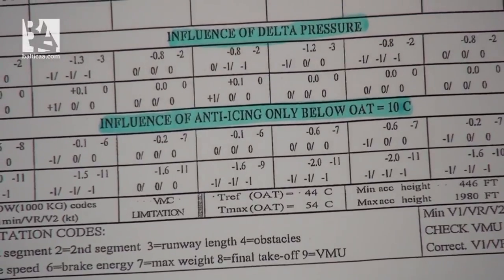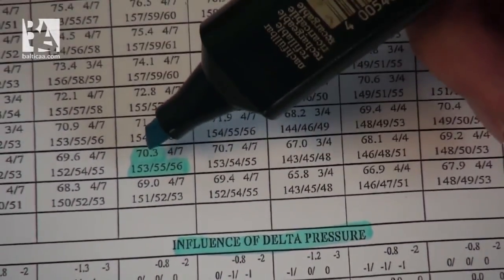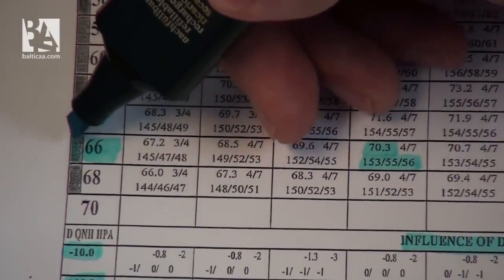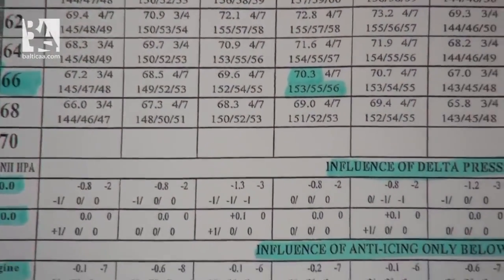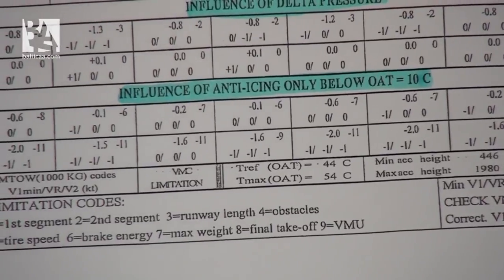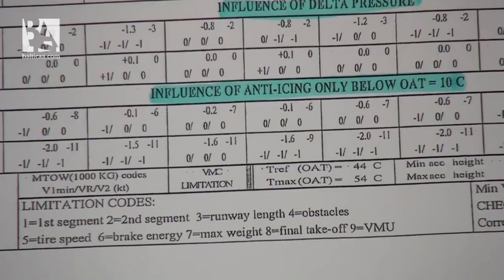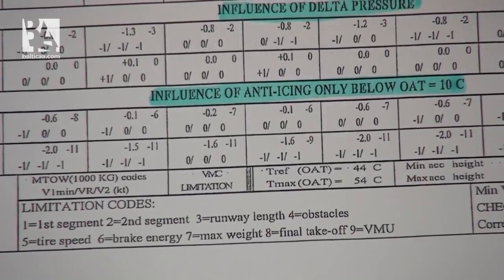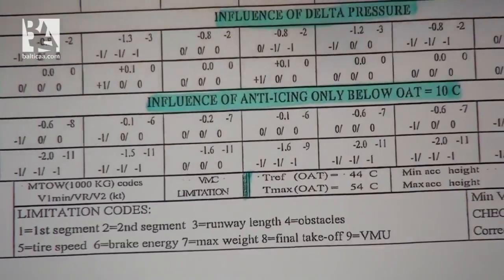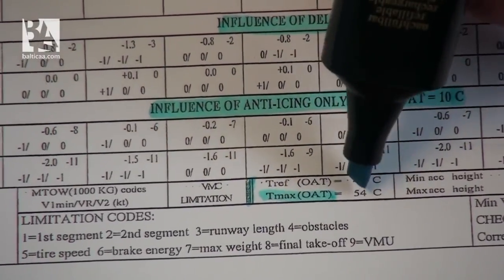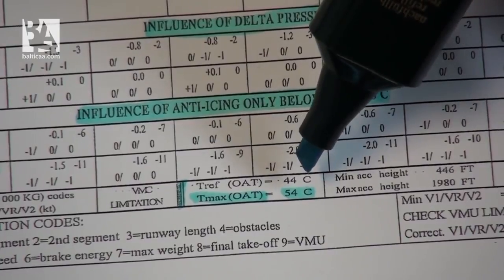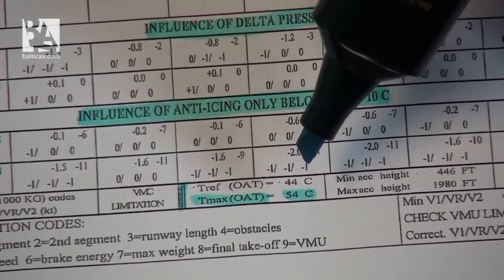Our weight with the speeds is in the 66 degrees column, but it has a gray area. This means we could use a flex temperature — or assumed temperature — of 66 degrees centigrade, meaning the engines would think they are at 66 degrees and act accordingly. However, the gray area means we have to go down to read that the maximum temperature we could use is 54 degrees centigrade. So even though we were in the 66-degree zone, we can only use 54 max.